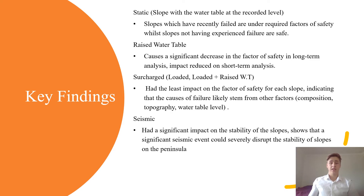The key findings were as follows. For the static water table, slopes which had recently failed were under the required factors of safety, whilst slopes that had not previously experienced failure were generally considered safe. The raised water table caused a significant decrease in the factor of safety in long-term analysis, though this impact was reduced during short-term analysis. Surcharge — both alone and combined with raised water table — had the least impact on the factor of safety for each slope, indicating that failure likely stems from other factors such as composition, topography, and water table level.